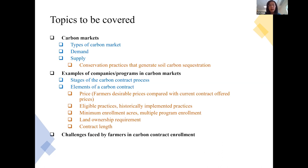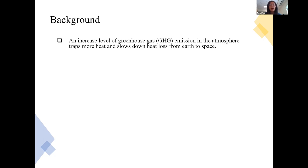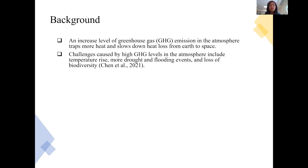The background: there is an increased level of greenhouse gas emissions in the atmosphere, which causes more heat being trapped and heat loss being slowed from the earth to space. Researchers find different challenges posed by high GHG levels, including temperature rise, more drought, flooding events, and loss of biodiversity.